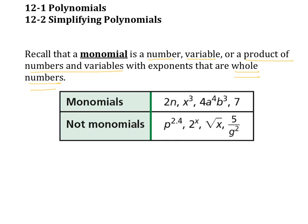Some examples of monomials are shown here: 7, 2n, x cubed, and 4a to the 4th b cubed. So 7 is a whole number — a monomial. 2n is the product of a number and variable — still a monomial. x cubed is a variable to a whole number exponent. And 4a to the 4th b cubed is the product of numbers and variables.